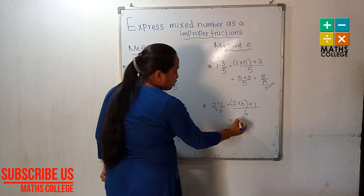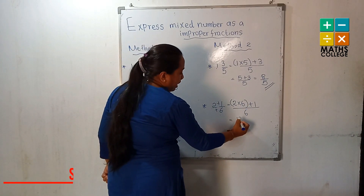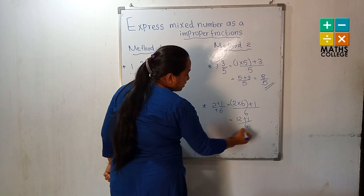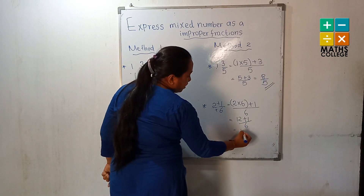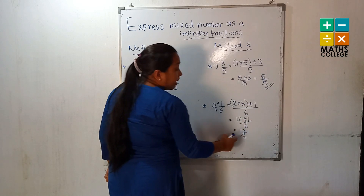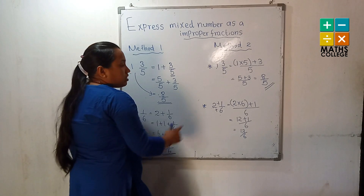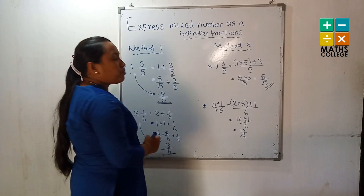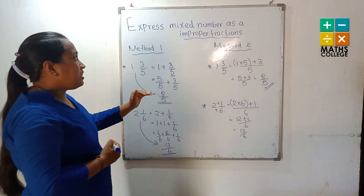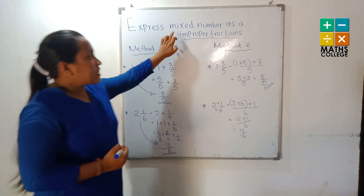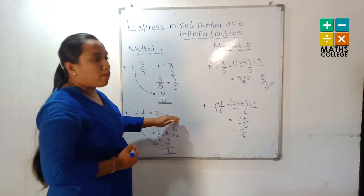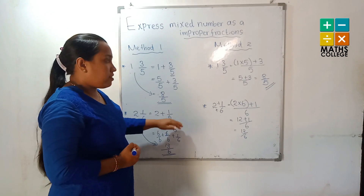Another example using method two: multiply the whole number by the denominator — six multiplied by two is twelve — then add the numerator: twelve plus one equals thirteen. Thirteen upon six is the improper fraction.